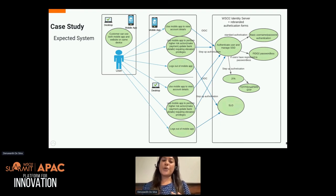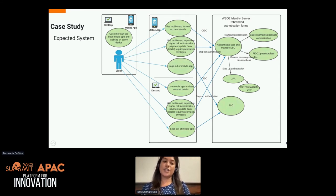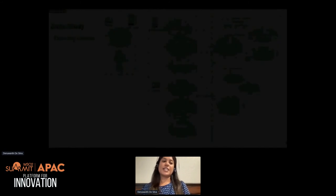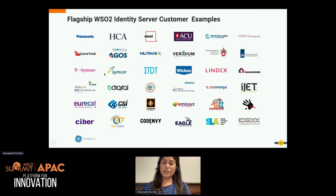Their approach was to first migrate the application layer to WSO2 IS — making existing applications OIDC or SAML compliant to achieve requirements like SSO — and then move the data layer. For the data layer, they used WSO2 IS extension points and built a custom user store manager incorporating their existing user database and custom password hashing mechanism. These are some of our flagship WSO2 IS customers from various verticals like finance and government.